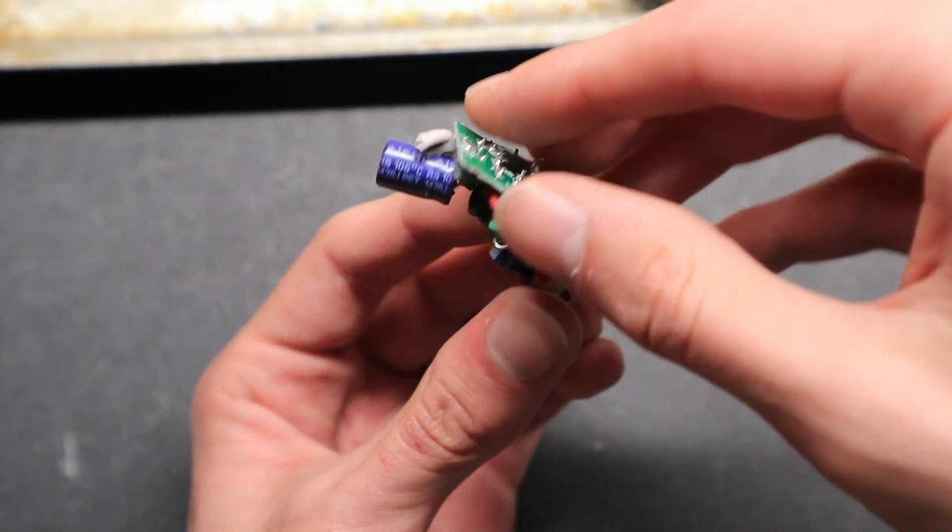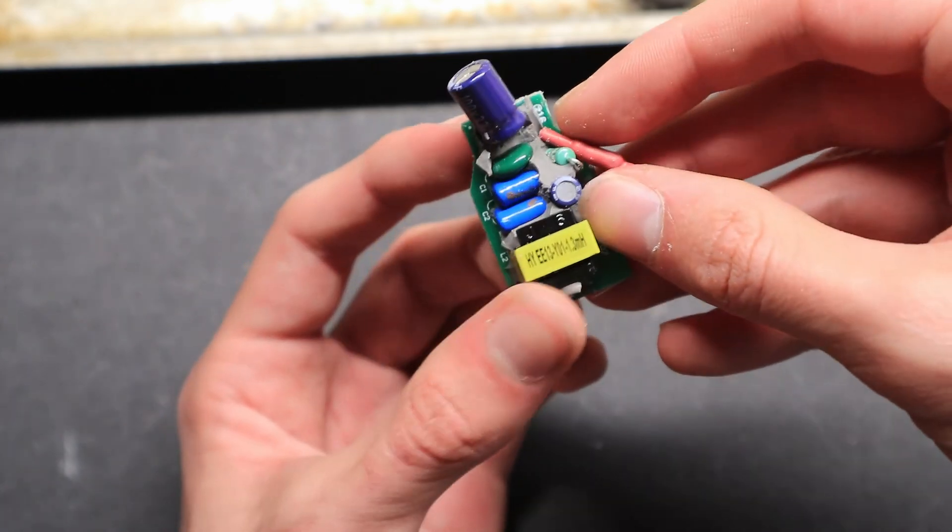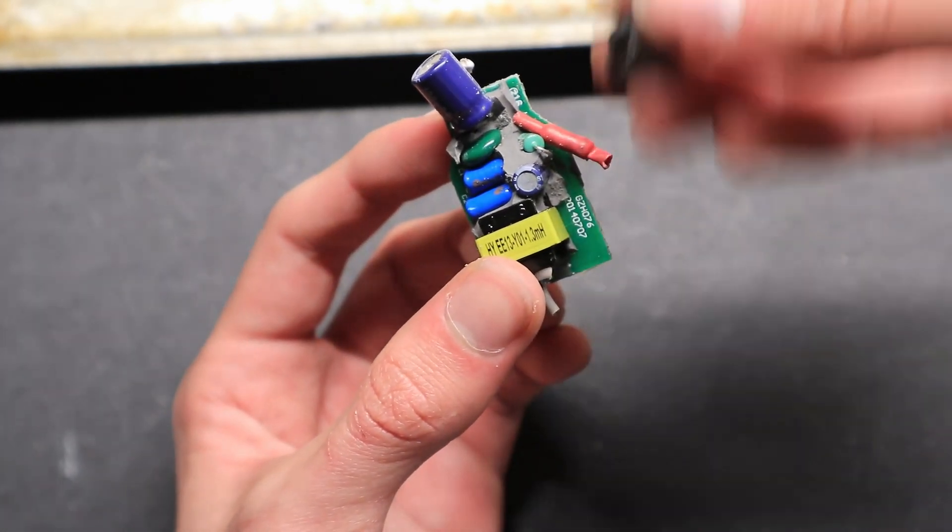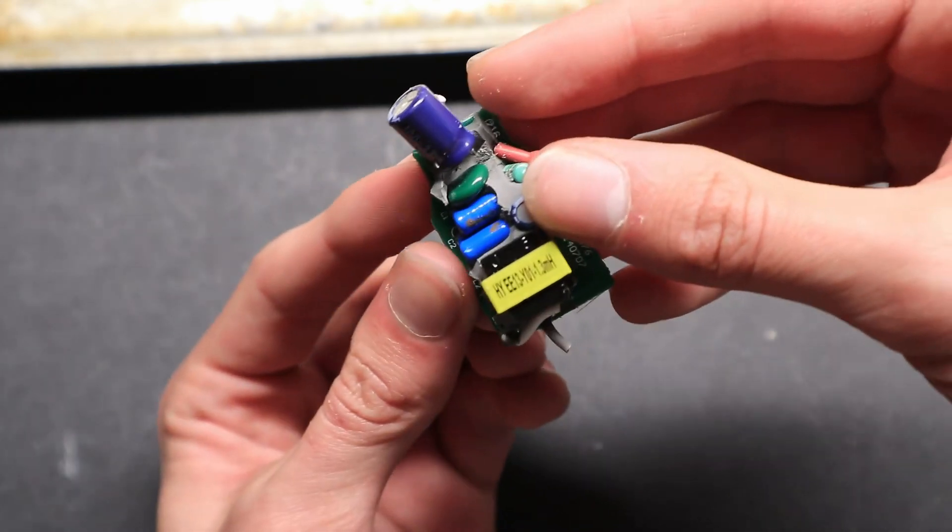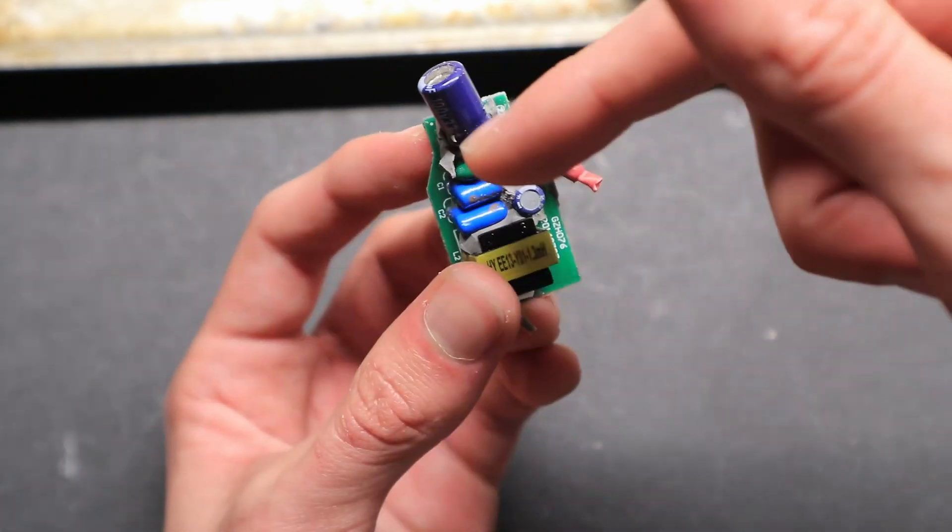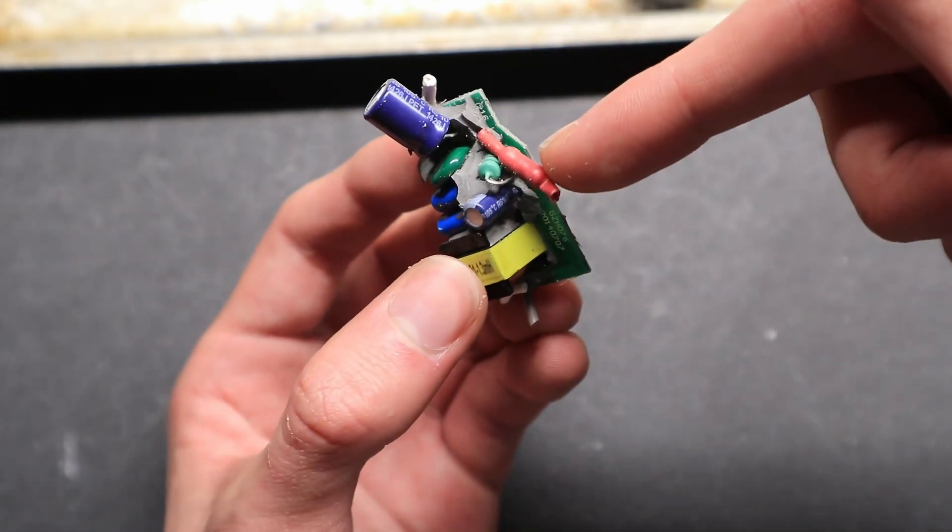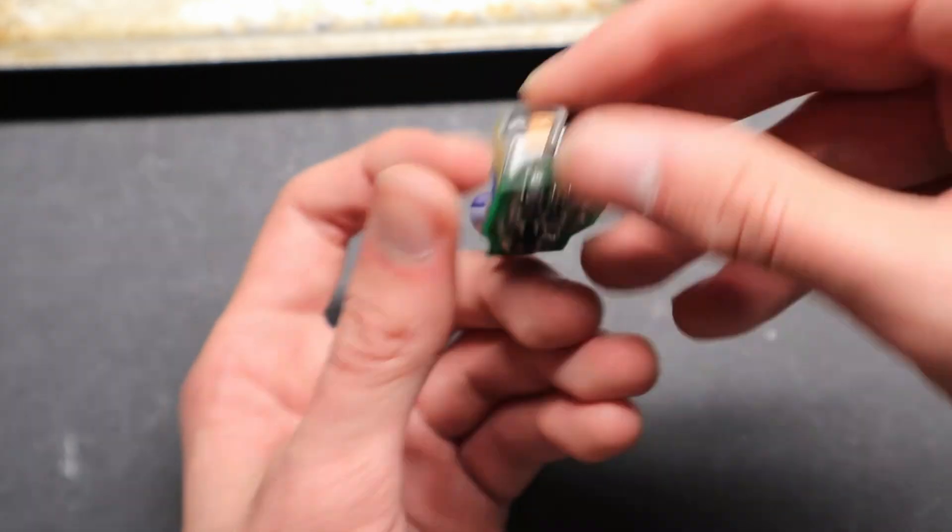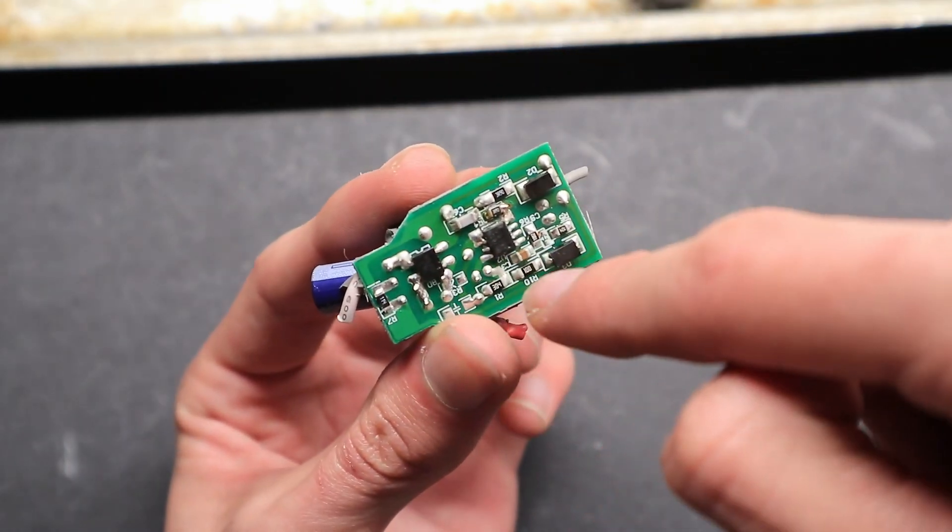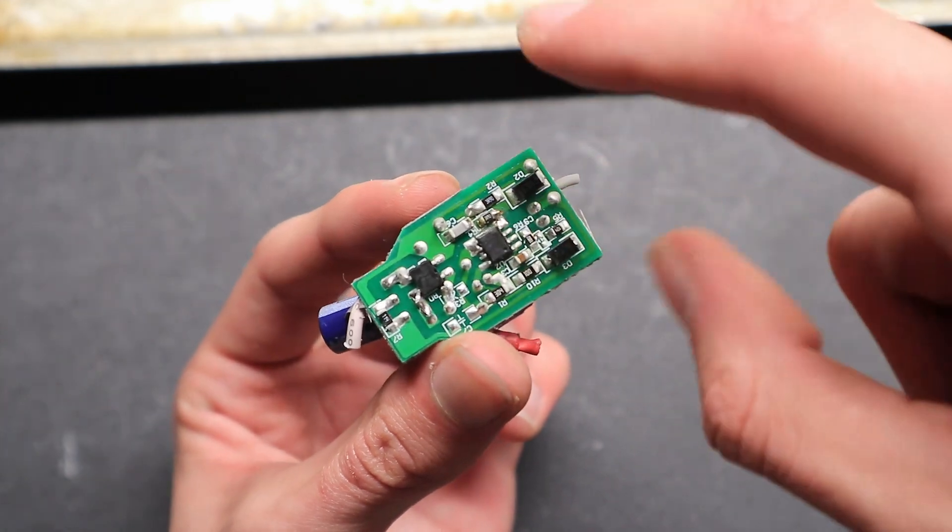Inside the LED bulb, there was this LED driver which was encased in epoxy resin. And I removed most of it. It contains this inductor, a bunch of capacitors, smaller inductor. And on the back, it contains bridge rectifier, an LED controller IC, and two diodes.